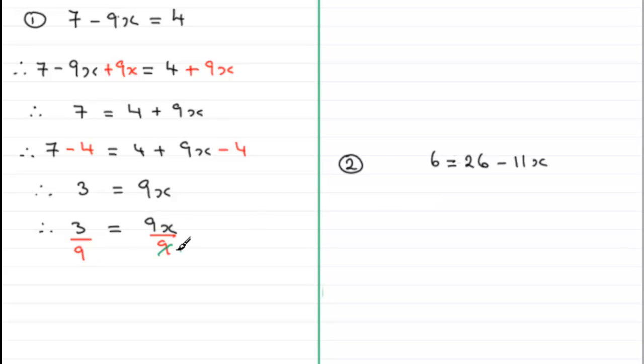This cancels out leaving me with just simply x and therefore I have x equals 3 ninths. 3 ninths or better still we can reduce that to x equaling 1 third. Remember we can cancel 3 into 3 goes once, 3 into 9 goes 3 times leaving us with 1 third.